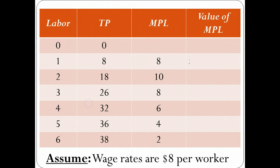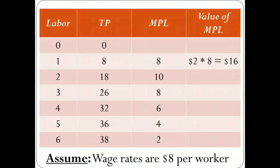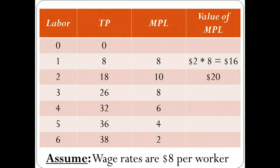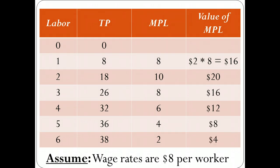We can then calculate the value of the marginal product of labor (VMP) — how much the additional output a worker creates is worth. Assuming every unit of output sells at $2, the VMP for the first worker is $2 times 8 units, which equals $16. The second worker's marginal product is ten, so their VMP is $20. The third worker's VMP is $16, the fourth's is $12, the fifth's is $8, and the sixth's is $4 — because they produce two additional units sold at $2 each.